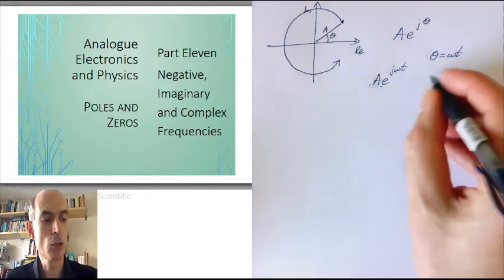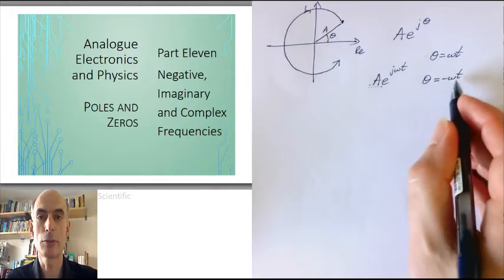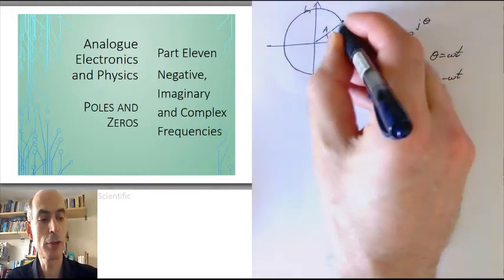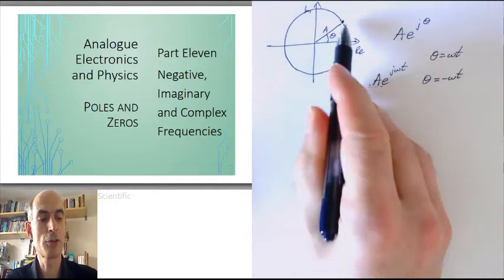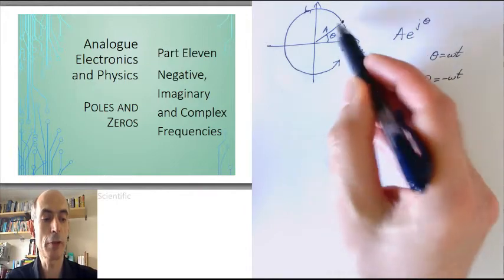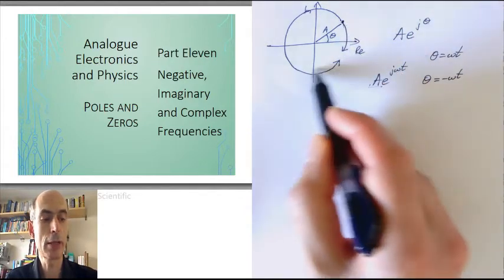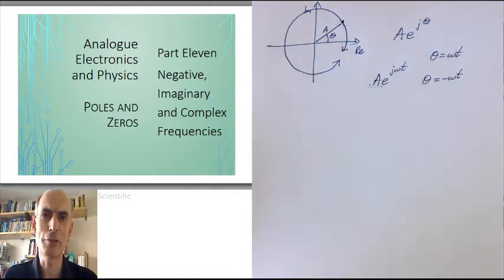A negative frequency would just mean that the phase angle was decreasing with time, so that the oscillation would be just going round the other way. As time increases, the angle decreases. And now we have a complex variable which is going round the diagram clockwise. That's what we mean by a negative frequency.